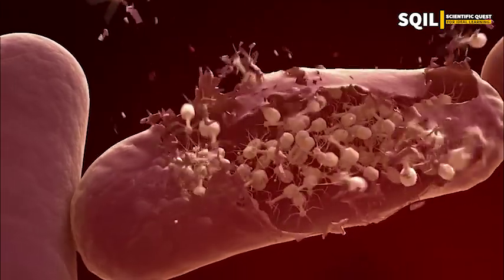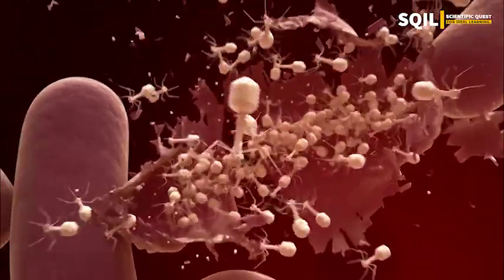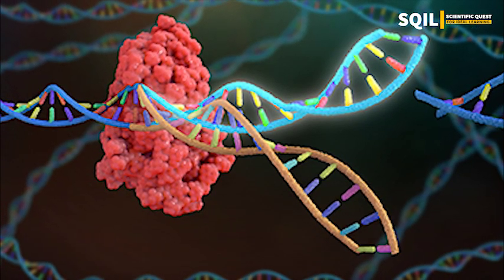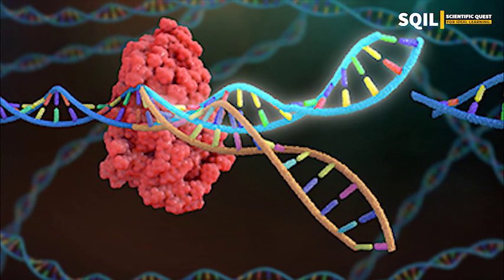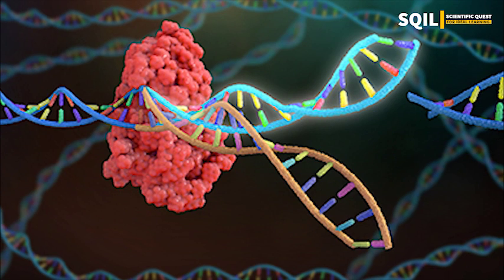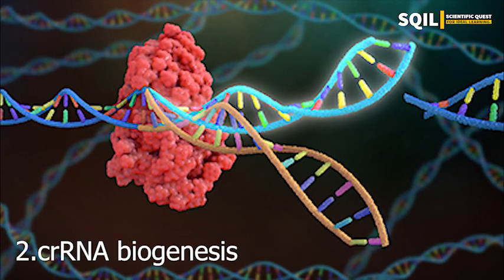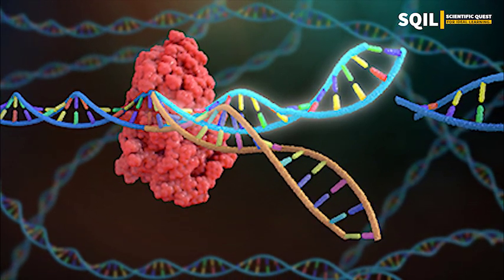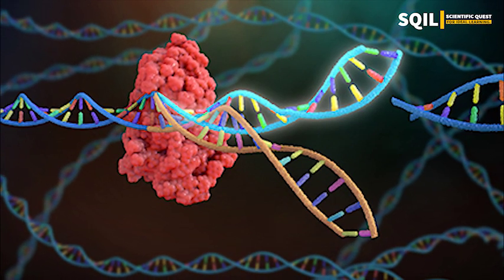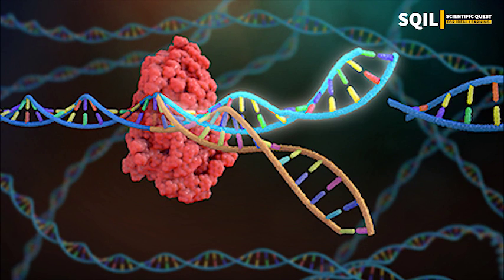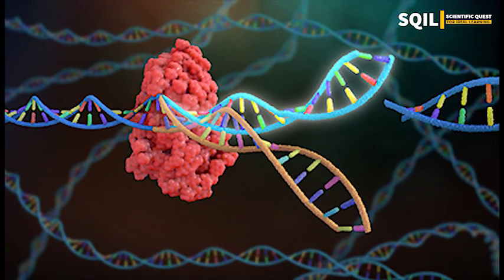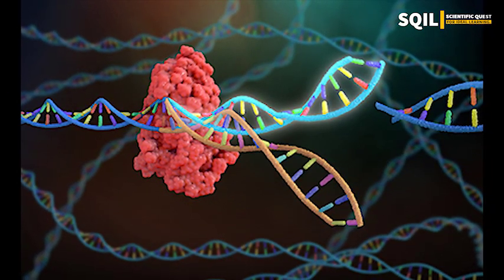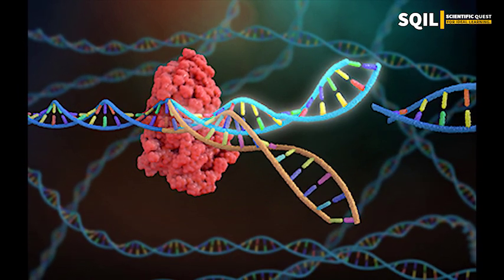The CRISPR system defends against bacteriophage attacks through three steps. First, adaptation: the invading DNA fragments are acquired and incorporated in between the crRNAs. Second, crRNA biogenesis: pre-crRNA from crRNA repeats including pathogenic DNA fragments are processed and matured by CAS protein. Third, interference: crRNA binds to the pathogenic DNA fragments complementary to it, and the CAS protein cleaves the pathogenic DNA at a site called PAM — Proto-Spacer Adjacent Motif.